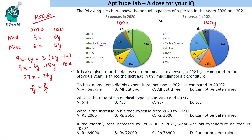We do not know the absolute total, but we know the ratio is 8:9. So we can assume expenses of 800 and 900, or 8000 and 9000, or 80,000 and 90,000 — whichever is comfortable — to answer most of the questions. The first question is: on how many items did the expenditure increase in 2021 compared to 2020?